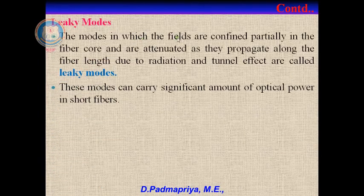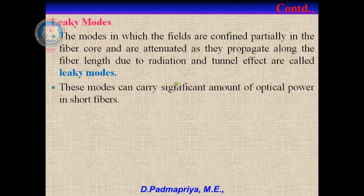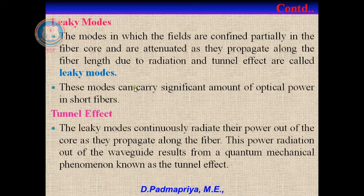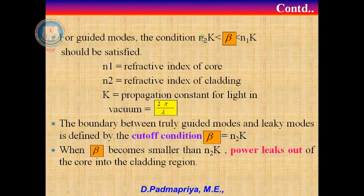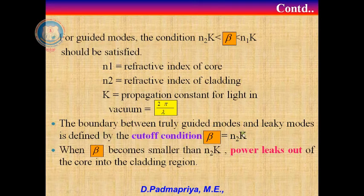Leaky modes are modes in which the fields are confined partially inside the core and get attenuated as they propagate along the fiber length due to radiation and tunnel effect. Leaky modes carry significant optical power. The leaky modes radiate power out of the core as they propagate; this results from a quantum mechanical phenomenon known as the tunnel effect. For guided modes, the propagation constant beta must lie between N2k and N1k where k = 2π/λ. The boundary between guided and leaky modes is defined by the cutoff condition beta = N2k. When beta becomes less than N2k, power leaks out of the core into the cladding region.